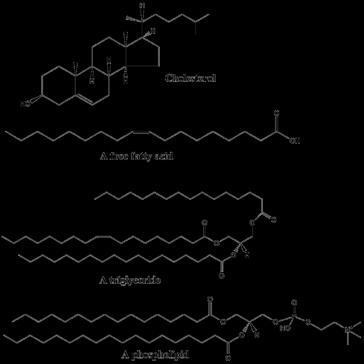Most of the fat found in food is in the form of triglycerides, cholesterol, and phospholipids. Some dietary fat is necessary to facilitate absorption of fat-soluble vitamins and carotenoids. Humans and other mammals have a dietary requirement for certain essential fatty acids, such as linoleic acid (an omega-6 fatty acid) and alpha-linolenic acid (an omega-3 fatty acid), because they cannot be synthesized from simple precursors in the diet. Both are 18-carbon polyunsaturated fatty acids differing in the number and position of double bonds. Most vegetable oils are rich in linoleic acid. Alpha-linolenic acid is found in green leaves of plants and in selected seeds, nuts, and legumes, particularly flax, rapeseed, walnut, and soy.